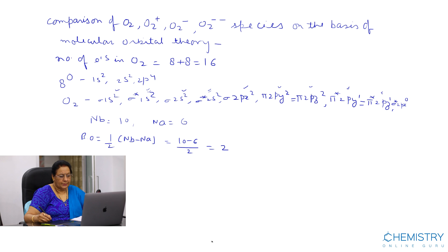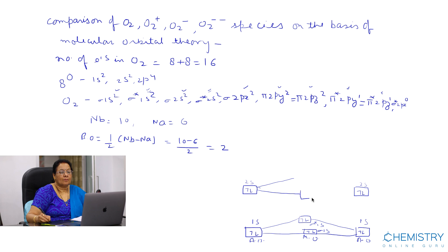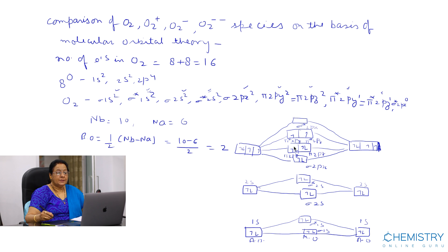We can draw the energy level diagram for O2. The diagram shows the 1s atomic orbitals of oxygen, with 2 electrons in sigma 2px, 2 in pi 2py, and 2 in pi 2pz, along with 1 electron in each of the anti-bonding pi star orbitals.